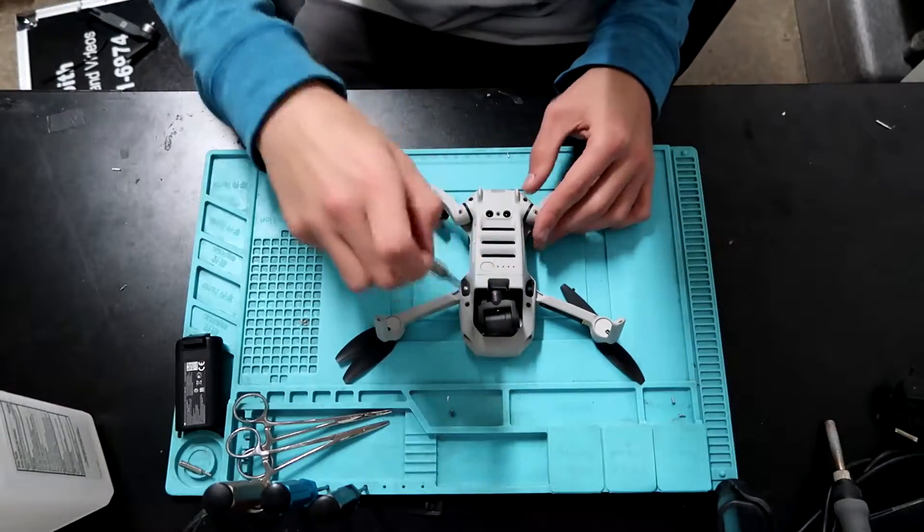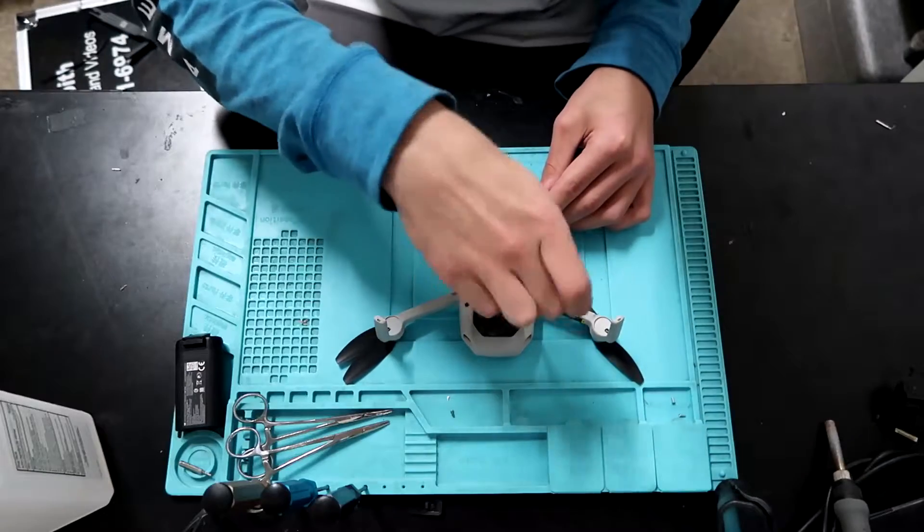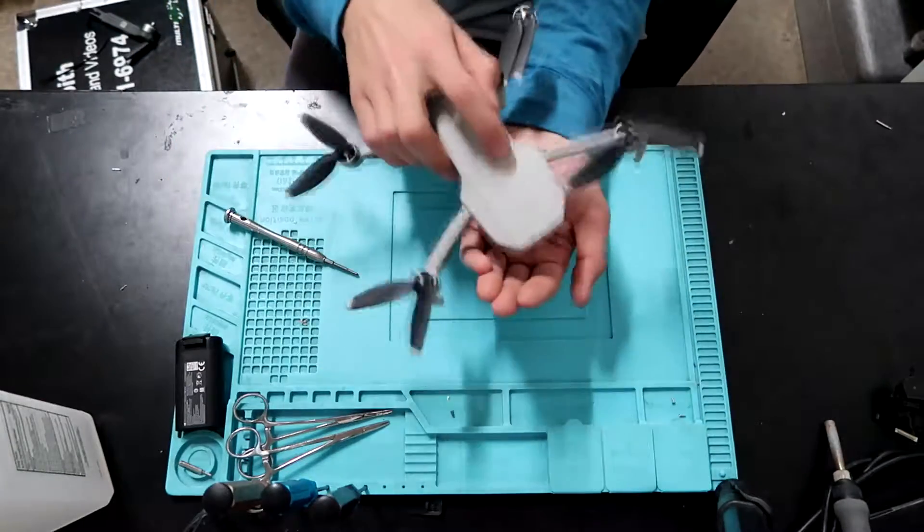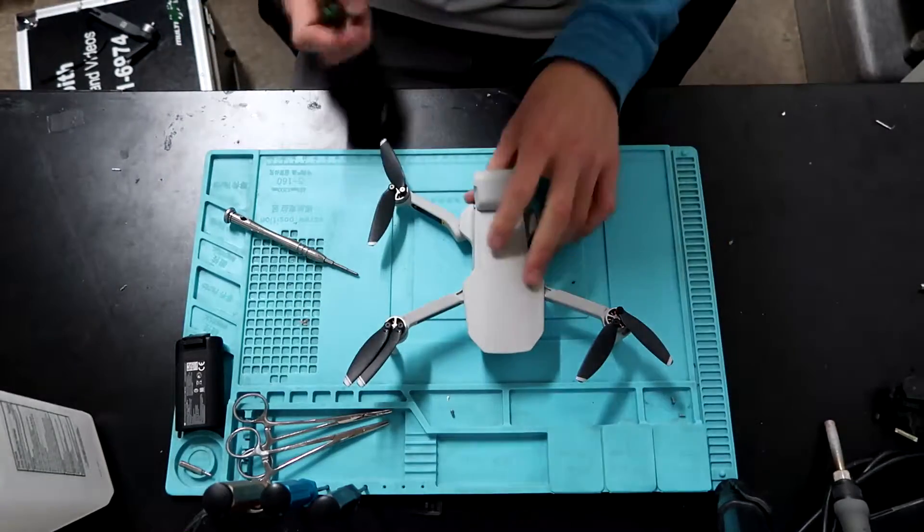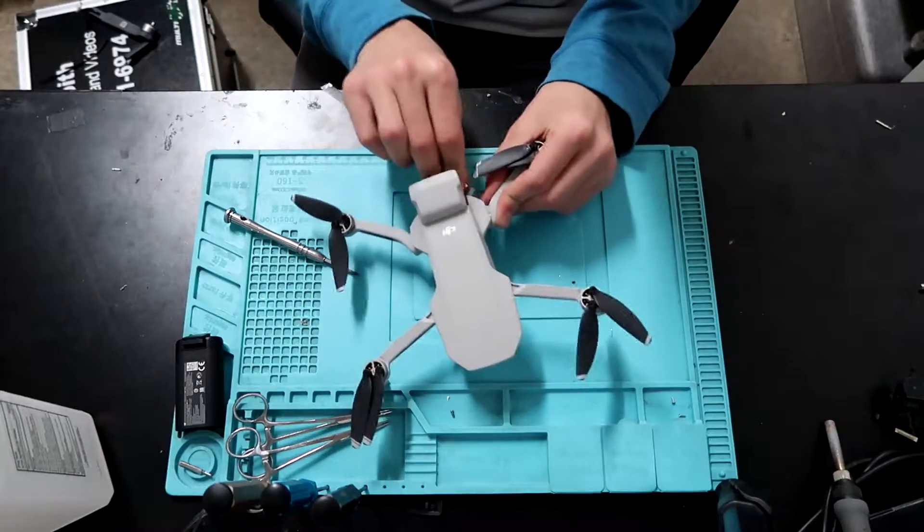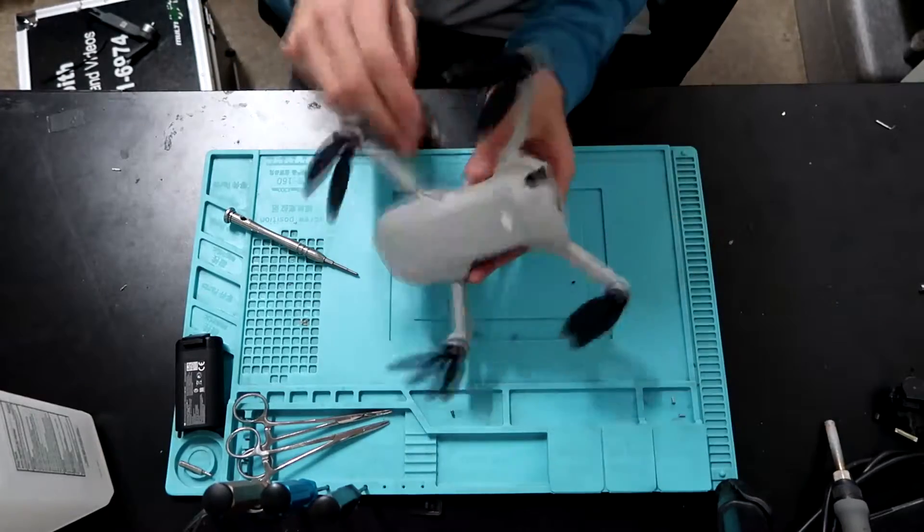So there's going to be four screws for the top shell and two screws for the bottom shell. You're going to want to remove both of those. And if you want to know exactly how to do that, I'll have a video showing you guys how to do that in the description below.